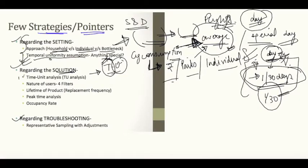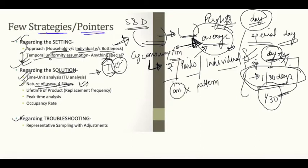Remember the TU analysis. We've already discussed the nature of the user — you have to figure out the consumer and their consumption pattern. To identify the consumer and get hints about their pattern, you use the four filters. The next point is the lifetime of a product or replacement frequency.